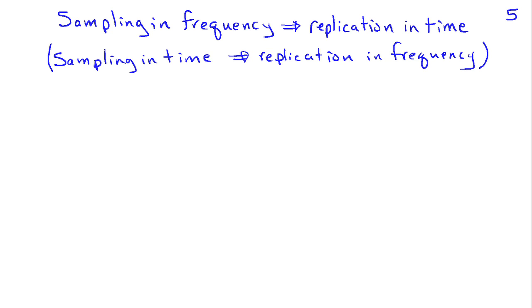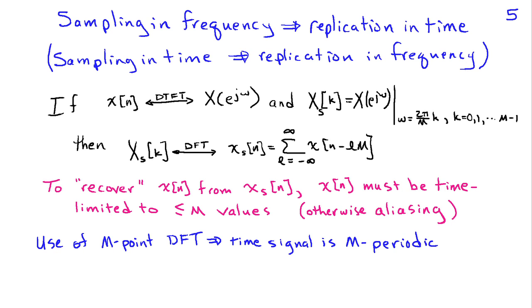So to summarize this, sampling in frequency causes replication in time, just like sampling in time causes replication in frequency. And if I have a signal x of n whose DTFT is x of e to j omega, and I take samples of the DTFT, call that x_s of k, and those samples are spaced by 2 pi over M, then DFT pair for x_s of k is a time domain signal who is a sum of shifted replicates of the original signal.